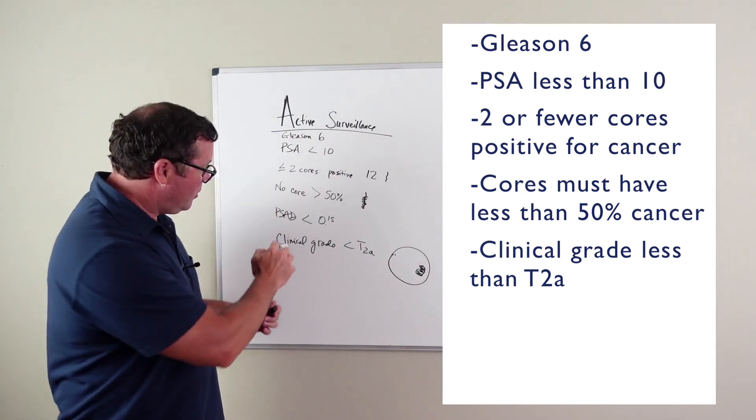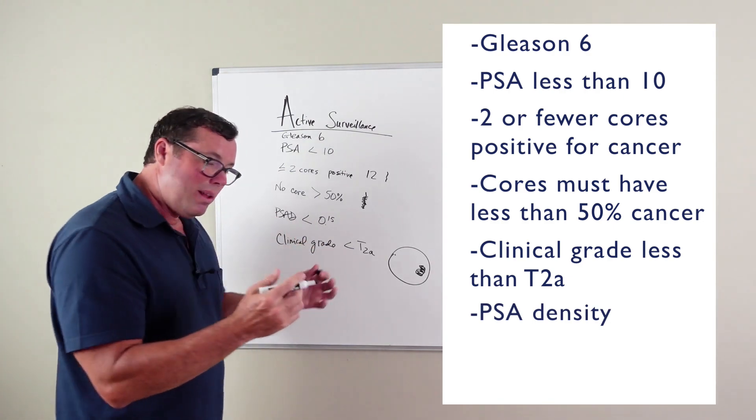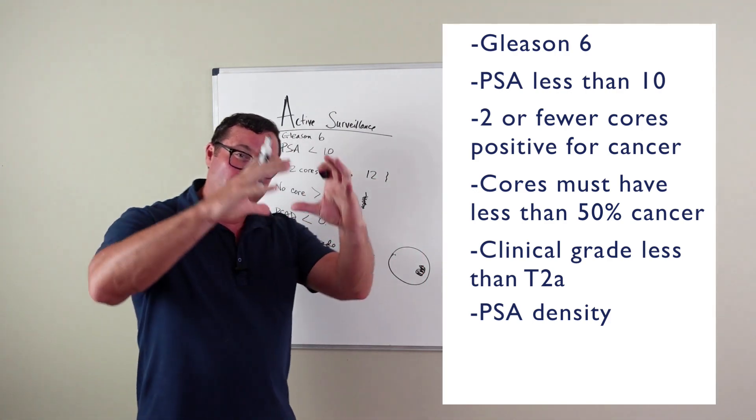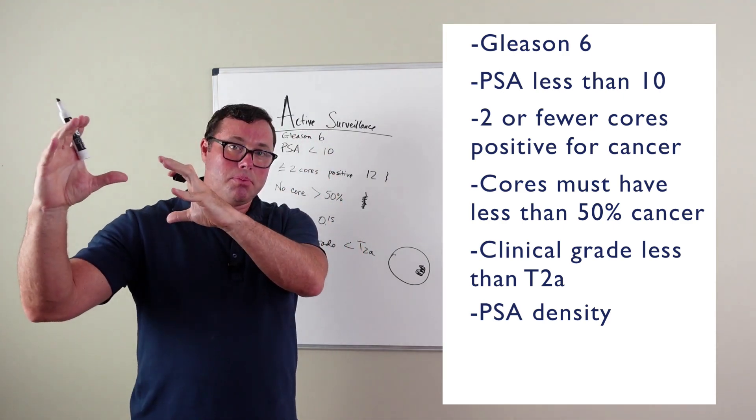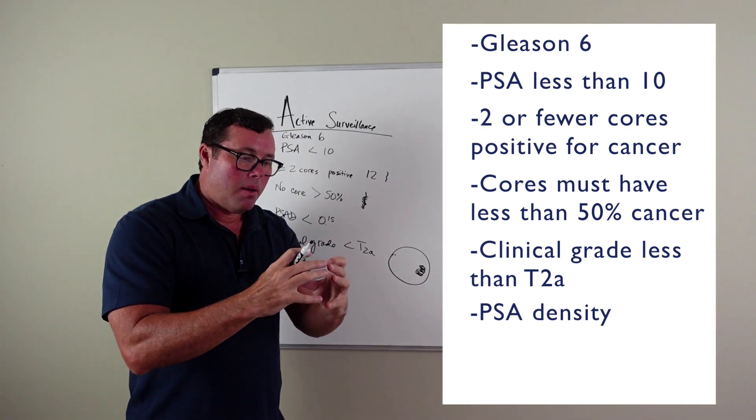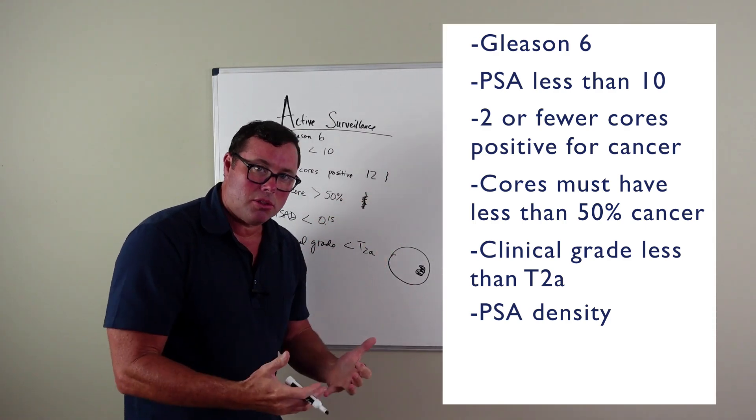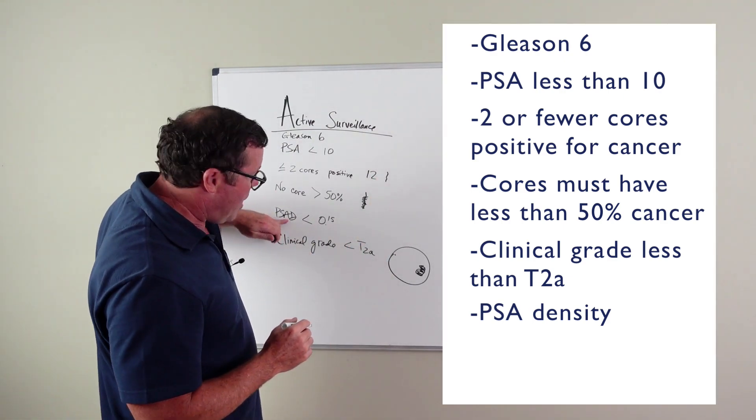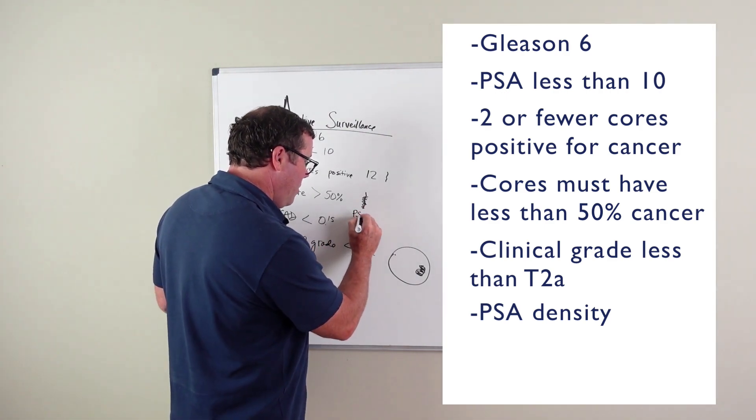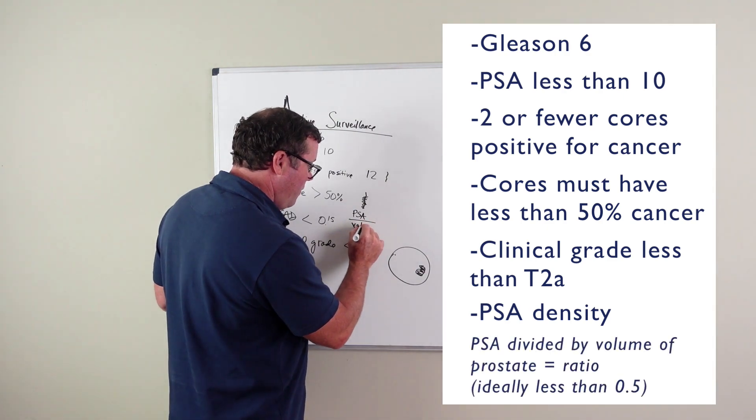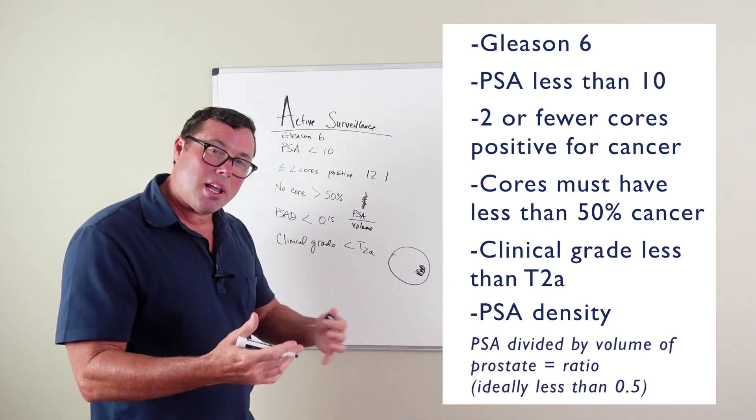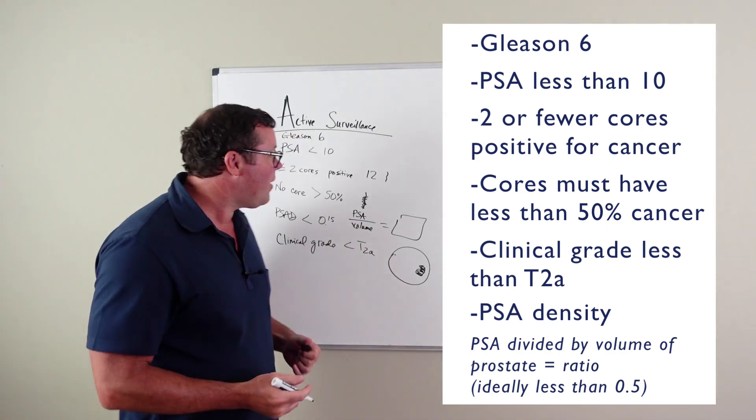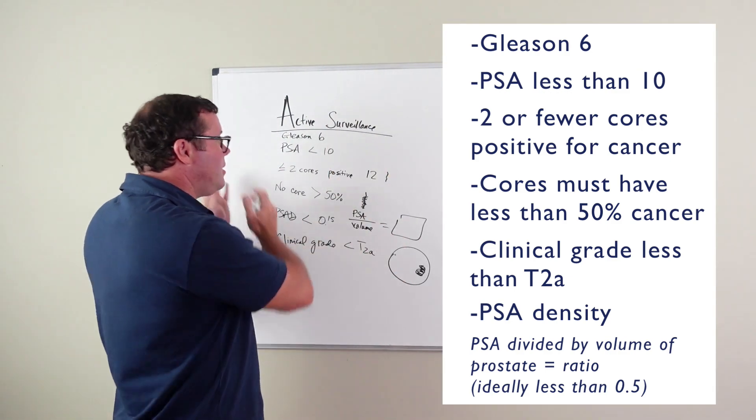And then the last thing is what's called PSA density. What this is, is it looks at the ratio between PSA and the volume of prostate. As the prostate gets bigger, more PSA is produced. In a smaller prostate, having a PSA of 10 is much more suspicious in a small prostate than it is in a bigger prostate. And so this is using PSA density and really it's a ratio. So it's your PSA divided by your volume of prostate on your ultrasound. And this gives you a ratio. And again, you would like this ratio to be less than 0.5.